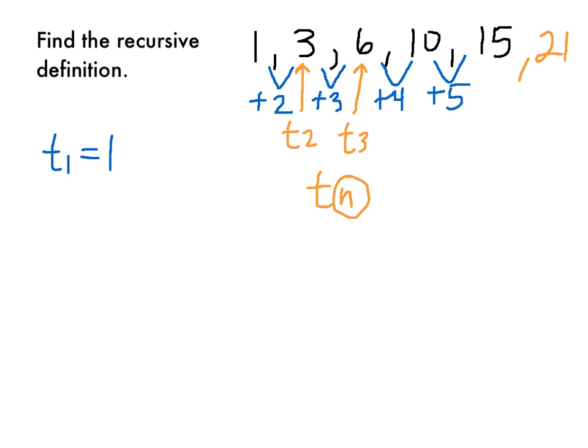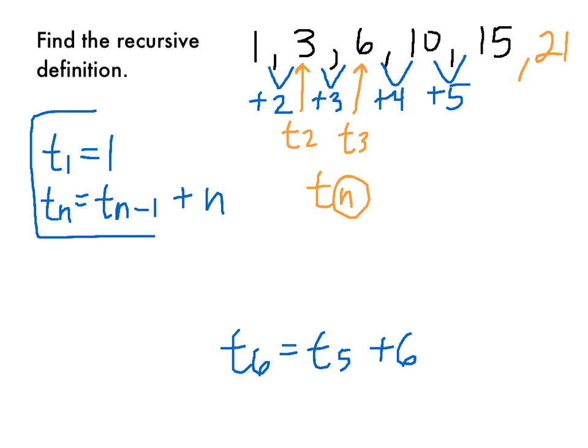How do we write that? Well, we have our first piece, t sub 1 equals 1. For t sub n, I'll do an example down here as we craft this. For t sub 6, we would want to take t sub 5 and add 6 to that. So in general, it's going to be t sub n minus 1 plus n. So we can involve n in these formulas. That will complicate things definitely. We'll take a look at it more tomorrow. But this would be your final answer. t sub 1 equals 1, and t sub n equals t sub n minus 1, or the previous term, plus n.